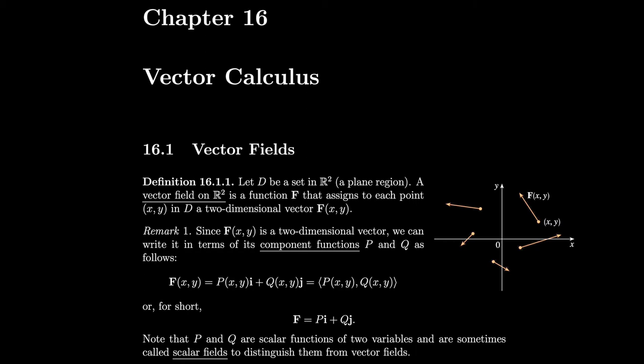In our picture on the right, we have some point (x, y) and then the corresponding vector F(x, y), which we draw from that point. We do that for a bunch of vectors in the vector field so we can get a good picture of what it looks like.